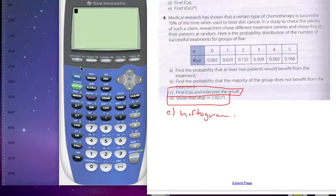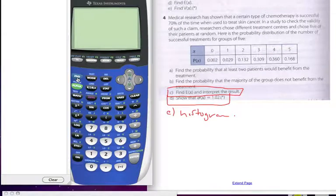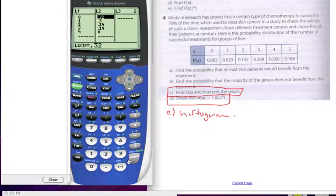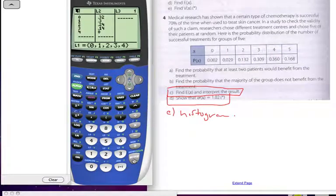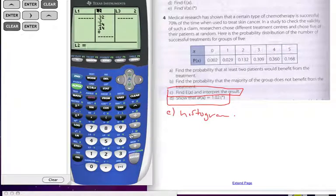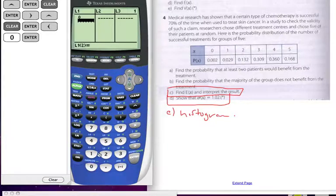So to find the expected value, I'm going to go to my calculator. I'm going to clear this list. So I go stat, I'm going to edit, and I'm going to go on top of this list. I'm going to clear what's there, go on top of L1, hit clear and enter. Go on top of L2, clear and enter. If I would hit delete, the whole list would go away. So now I'm going to put in my values for my random variable: 0, 1, 2, 3, 4, 5.